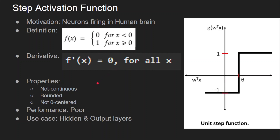From the curve we can say that the step function is not continuous and the output is bounded — the maximum value is 1 and the minimum is 0. It is not a zero-centred function because we have all positive values and no negative values. It is one of the earliest activation functions and the performance is poor compared to modern activation functions. It was used in both hidden layers and output layers in the early days.